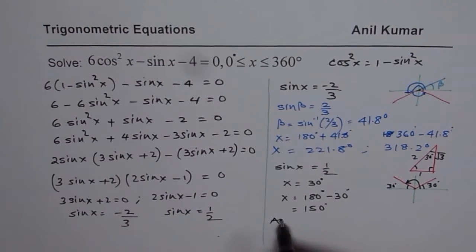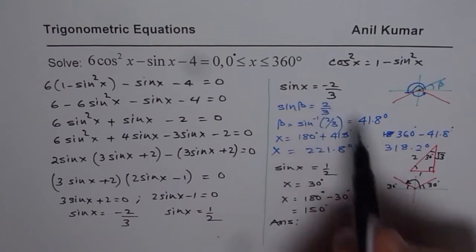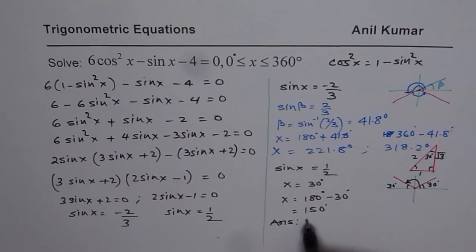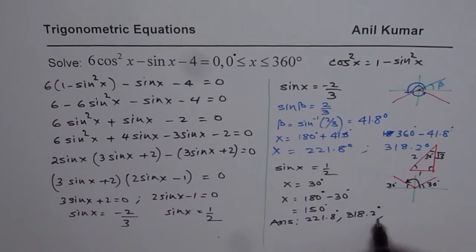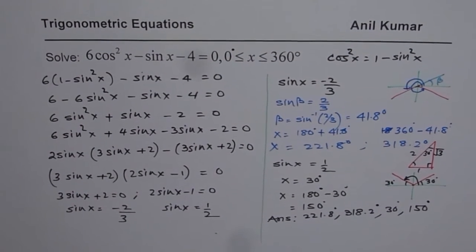Now we can write down all our answers. The answers are for the first factor: 221.8 degrees, then we have 318.2 degrees. And then here we have 30 degrees and 150 degrees. Four solutions for the given equation.